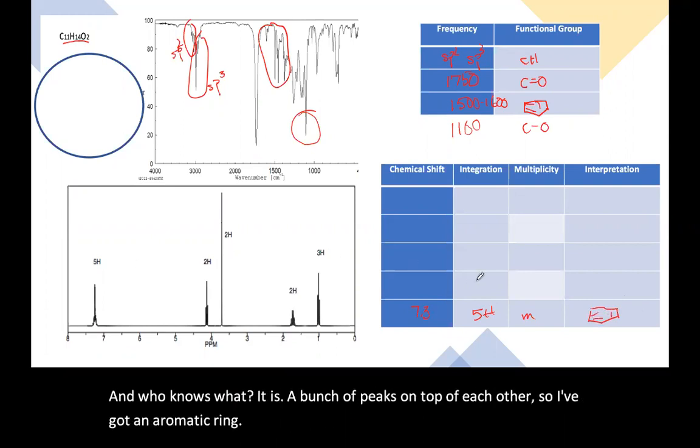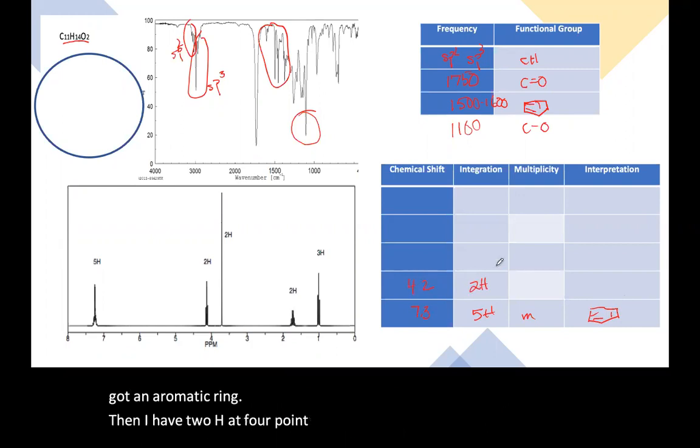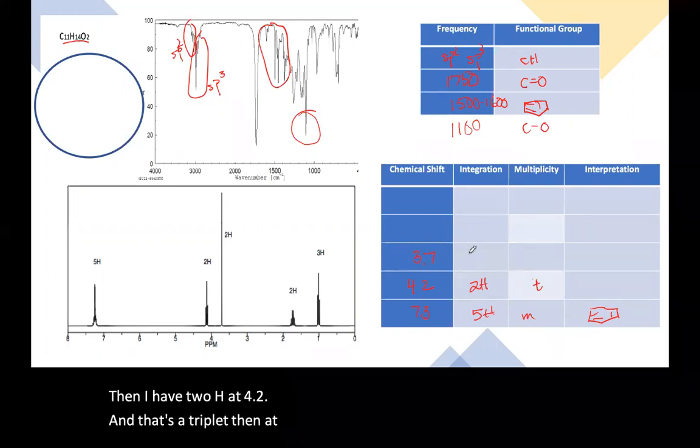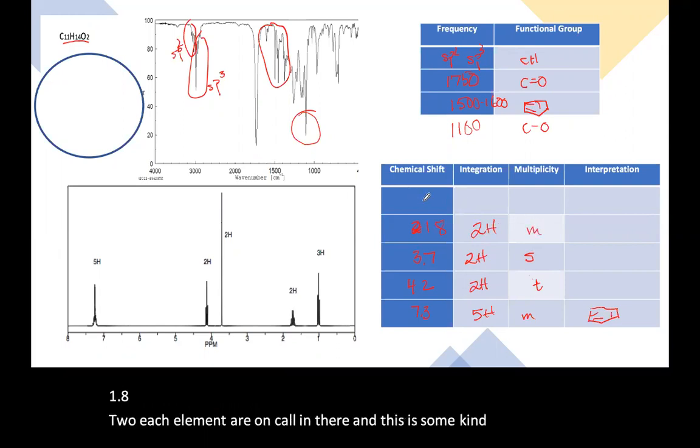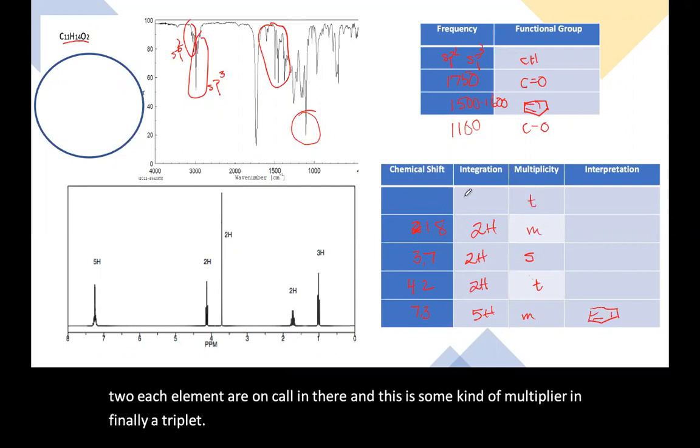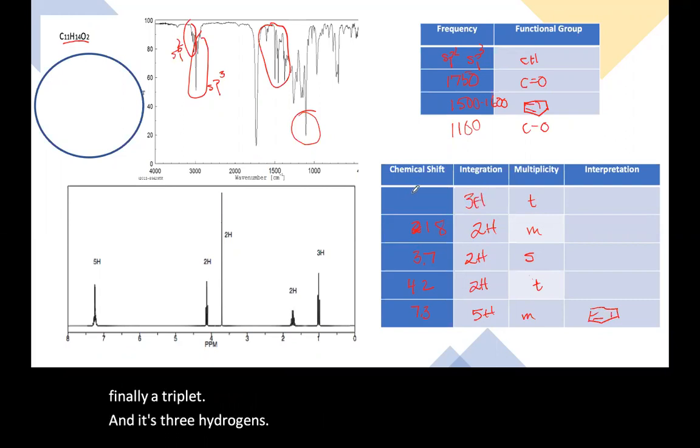Then I have 2H at 4.2 and that's a triplet. Then at 3.7, I have 2H and it's a singlet. 1.8, 2H. Got them in the wrong column there. And this is some kind of multiplet. And finally a triplet. And it's three hydrogens. And it's around one.